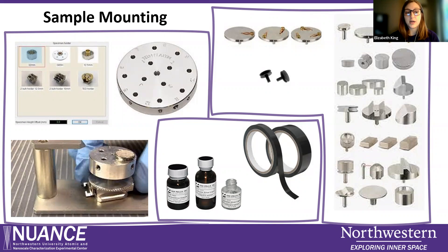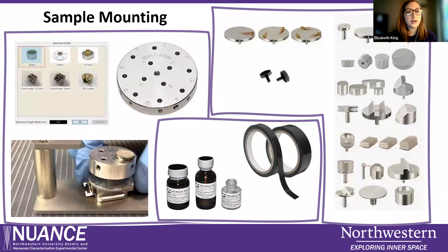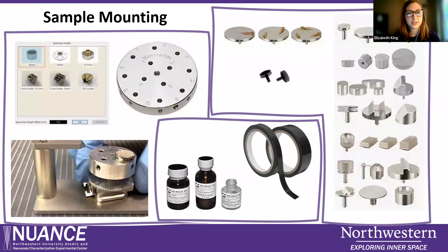There are so many different kinds — it's kind of modular. You can put different tops on different bottoms, different sizes for heights and things like that. On the top left is a screenshot from our JEOL 7900 software where you choose the type of sample holder you are using. You can see there are a few different types holding different numbers of pin stubs. Just as an example of the different types of sample holders floating around Nuance and EPIC — any of these could work for you, or if you need something more specific like holding a puck or a cross-section in epoxy, we have some for that as well.